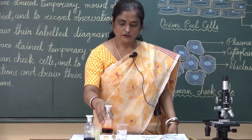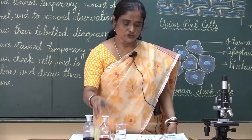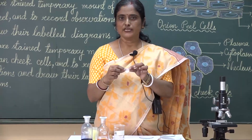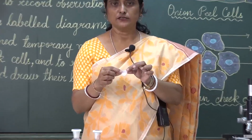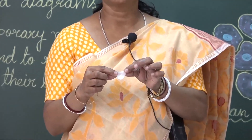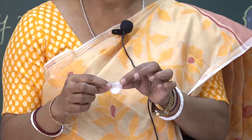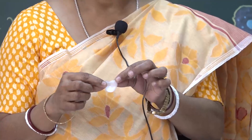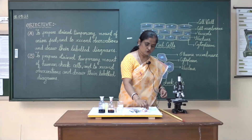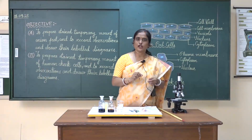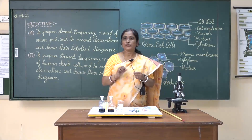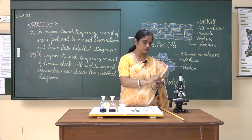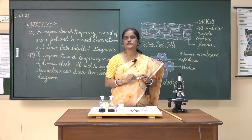Why do we need stain? Because if we see the onion, it is white in colour. We cannot see the cells under the microscope until we stain it. So we need to take out the peel of the onion; we cannot put it directly under the microscope and observe the cells.